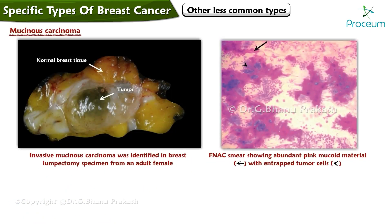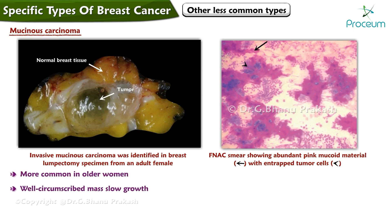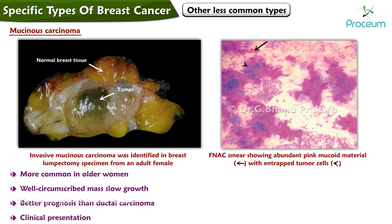Mucinous carcinoma is a type of breast cancer that is more common in older women, characterized by a well-circumscribed mass that exhibits slow growth and has a better prognosis than ductal carcinoma. The clinical presentation is a gelatinous, well-circumscribed mass.